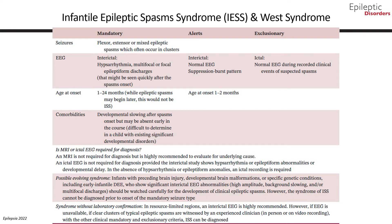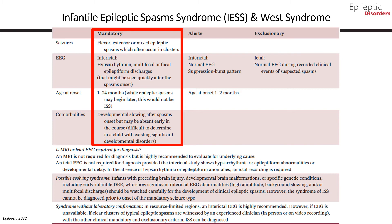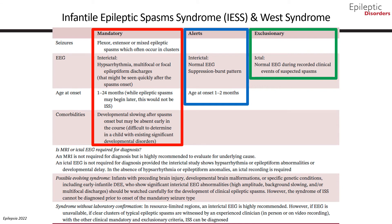The mandatory criteria for infantile epileptic spasm syndrome include seizures with flexor, extensor, or mixed epileptic spasms, which often occur in clusters, and an interictal EEG showing hypsarrhythmia, multifocal, or focal epileptiform discharges. The age of onset is typically between 1 and 24 months, and comorbidities include developmental slowing after spasm onset, which may be absent early in the course. Alerts suggesting investigation into alternative etiologies include a normal interictal EEG, an interictal EEG showing suppression burst pattern, or age of onset between 1 and 2 months. Criteria that excludes infantile epileptic spasm syndrome include a normal ictal EEG during a recorded clinical event of suspected spasm.